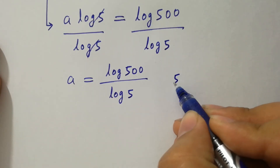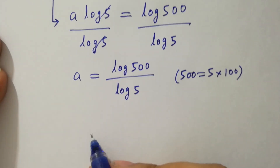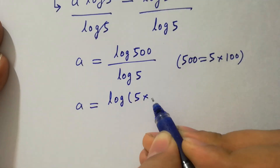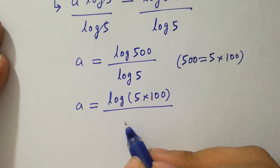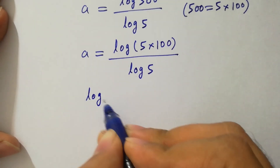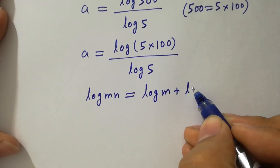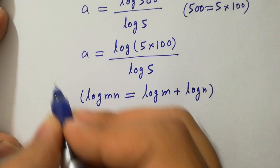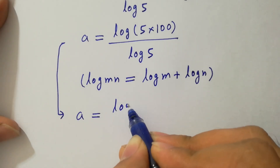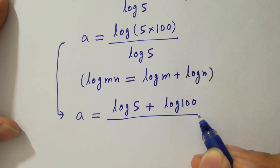Since 500 equals 5 times 100, a will be equal to log(5 times 100) over log 5. Since log(mn) equals log m plus log n, a equals log 5 plus log 100, all over log 5.